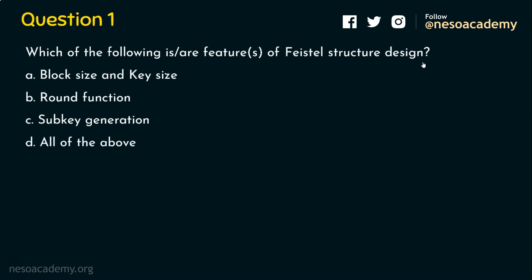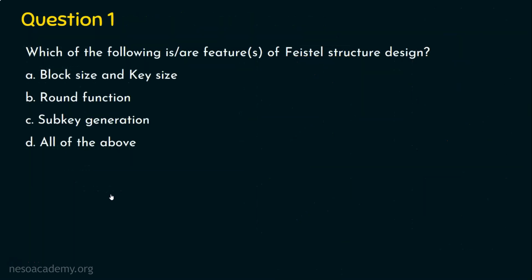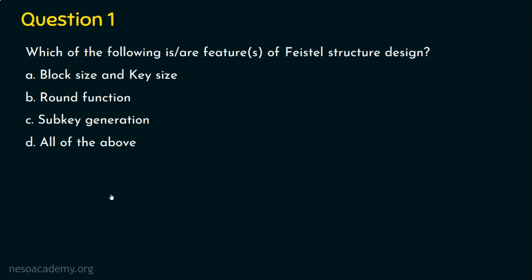I request you to pause this video for a while and think about the right answer. I hope you are done. If you recollect the Feistel design structure, I had explained there are various Feistel structure design features which include the block size, the key size, the number of rounds, the sub key generation algorithm, round function, the faster encryption and decryption process and the ease of analysis. Considering these design features, the right answer for this question will be option D, all of the above.